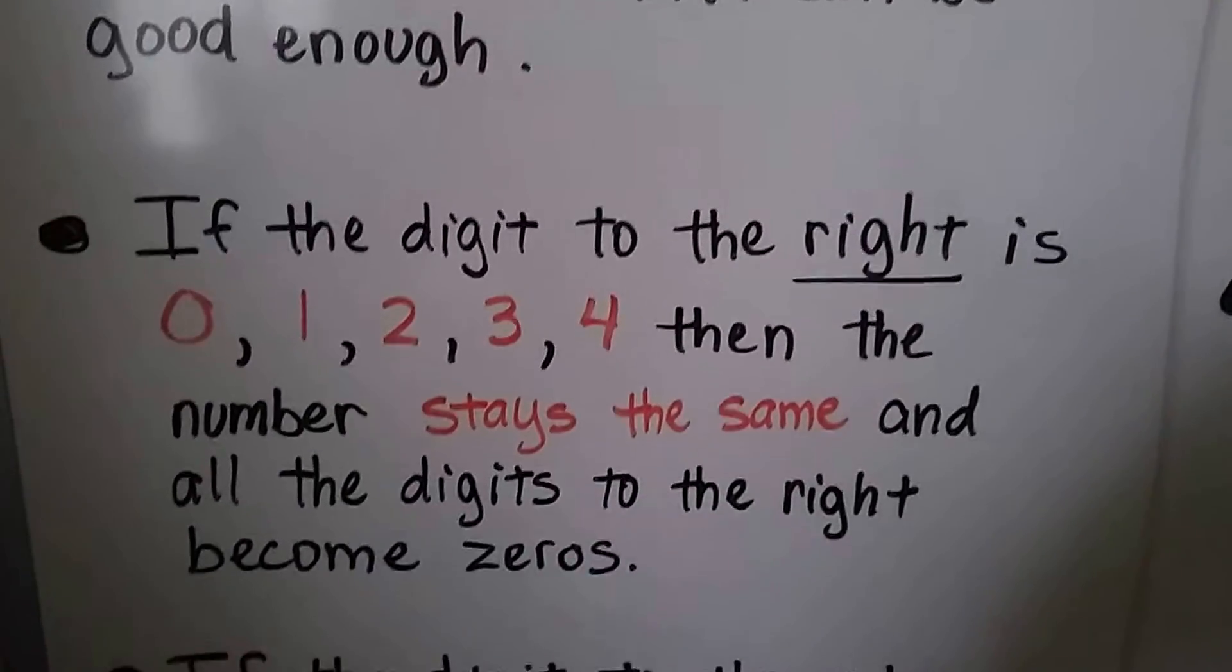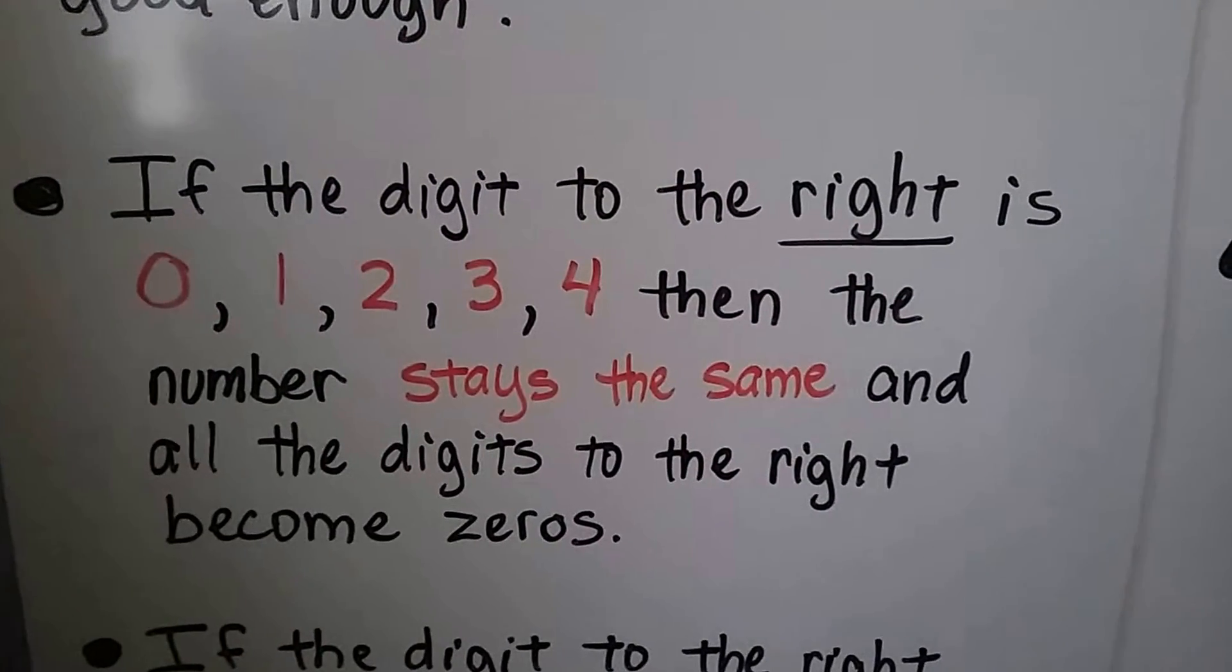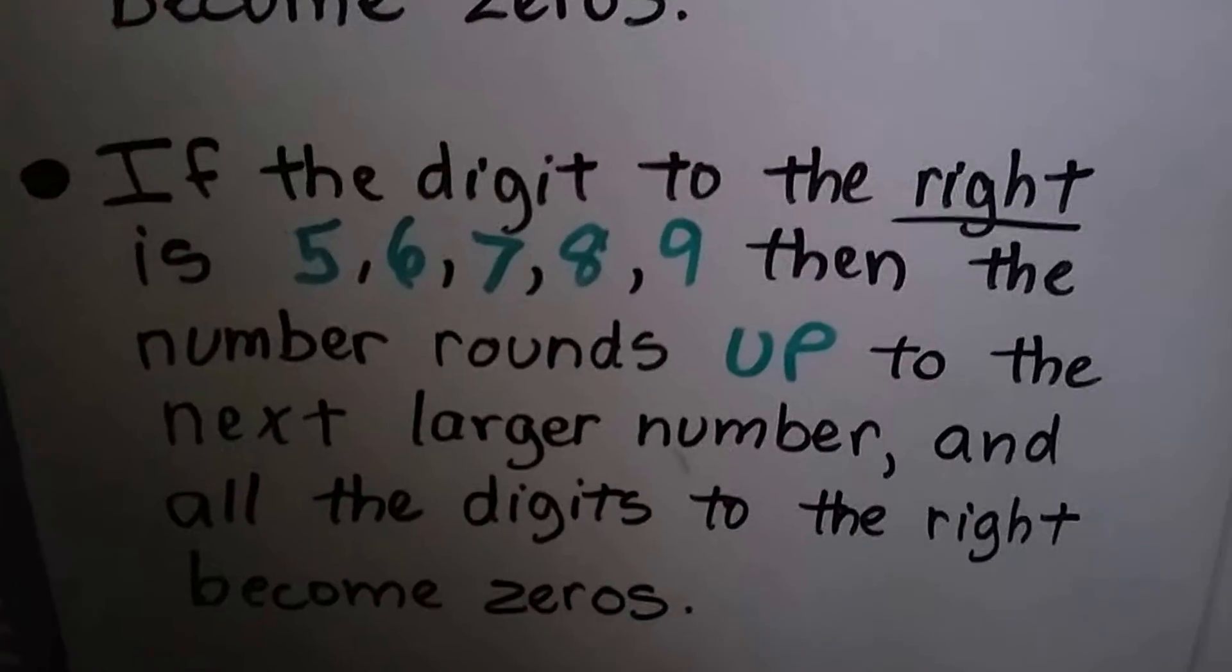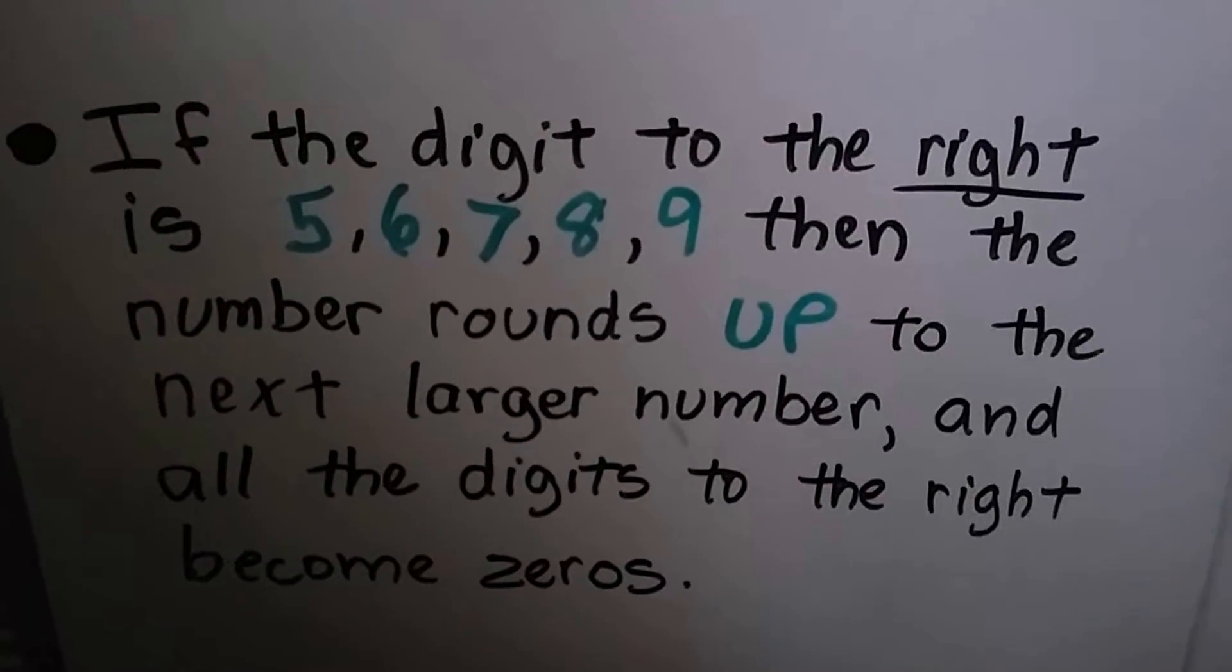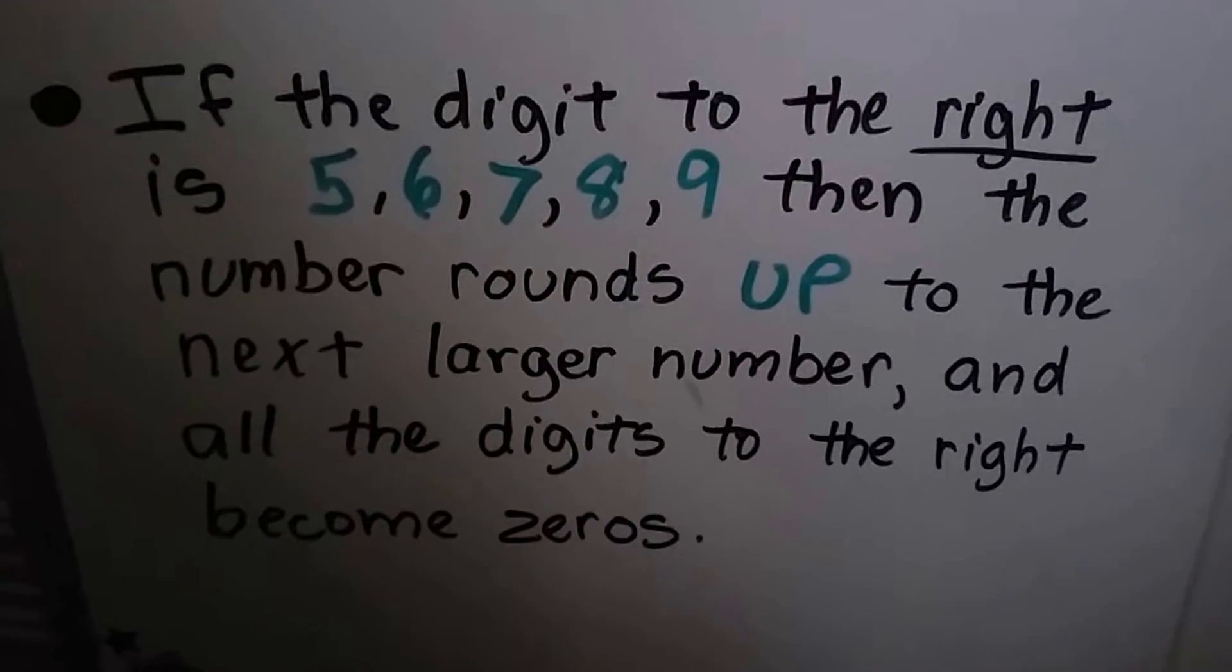If the digit to the right is 0, 1, 2, 3, or 4, then the number stays the same and the digits to the right become zeros. And if the digit to the right is 5, 6, 7, 8, or 9, then the number rounds up to the next larger number and all the digits to the right become zeros.